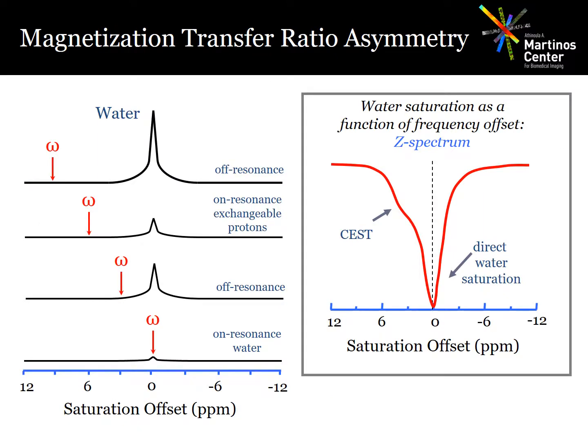Conventionally, the CEST signal is measured by sequentially exciting the magnetization with an off-resonant pulse at successive resonance offsets, and that's done to generate what's known as the Z-spectrum. When the offset equals the resonant frequency of the exchangeable protons, the water signal is reduced for that offset. This is typically quantified by subtracting the signal of the positive offsets from that of the negative offsets to obtain what's known as the MTR asymmetry, or the magnetization transfer ratio asymmetry.